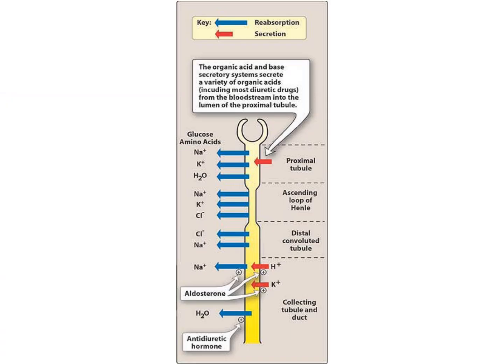This figure represents the glomerulus and renal tubule — the nephron within the kidney. The red color represents molecules that can be secreted into the lumen of the renal tubule via the organic acid and base secretory system, secreting diuretic agents from the bloodstream into the proximal tubule lumen. The blue color represents substances or electrolytes that can be reabsorbed from the lumen of the renal tubule.